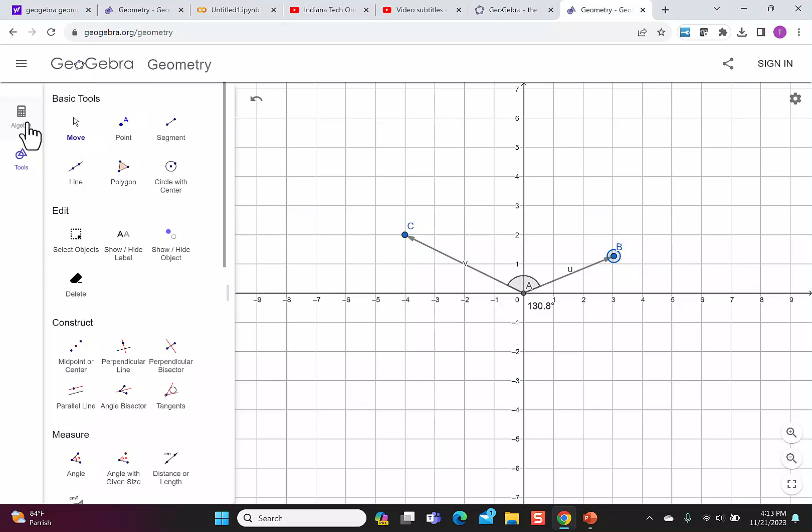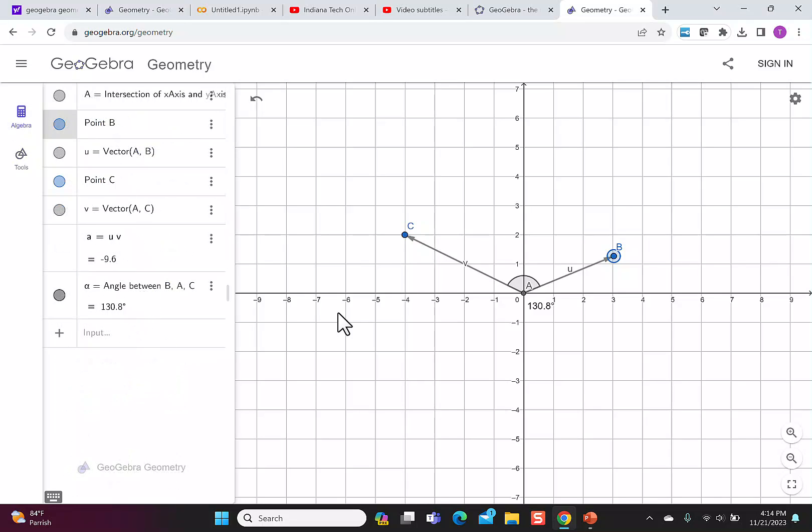And then if we have the algebra pane open, we would also see the dot product changing as we move this point. GeoGebra can additionally do addition and subtraction for vectors. If I put in u plus v, it gives me a vector and when I hit enter, it'll show you that it labeled it w.